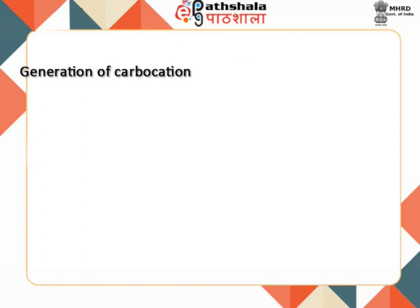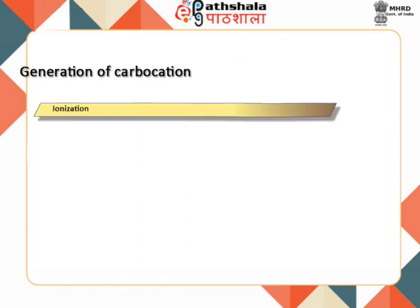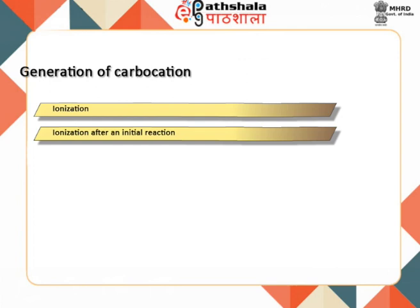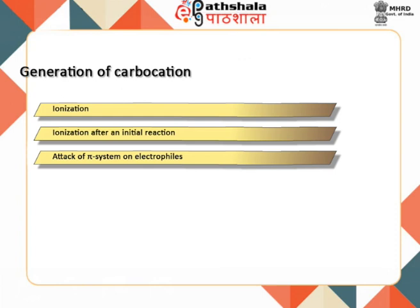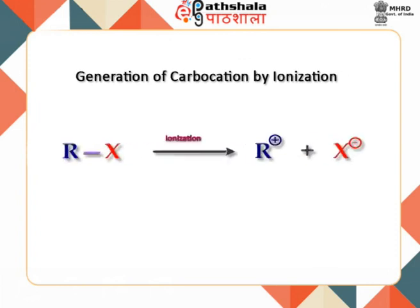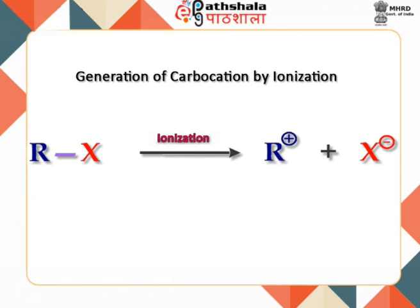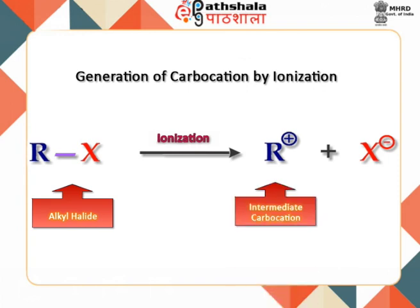Let us now study the methods available to generate a stable or unstable carbocation. The most common ways are ionization, ionization after an initial reaction, and attack of a pi system on electrophiles. During direct ionization, a leaving group attached to a carbon atom leaves with its pair of electrons, resulting in the generation of a carbocation. For example, during solvolysis, an alkyl halide ionizes to the intermediate carbocation and the corresponding anion.